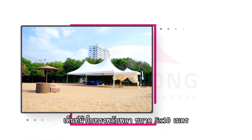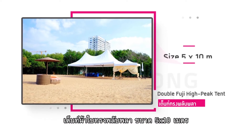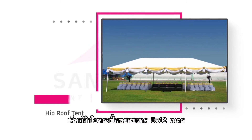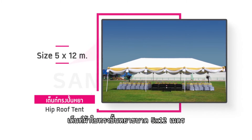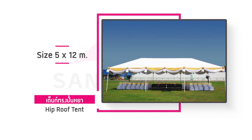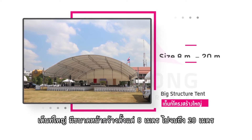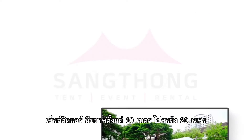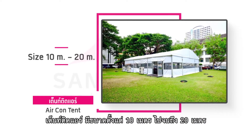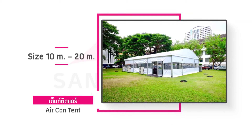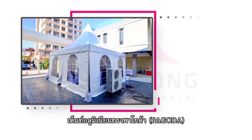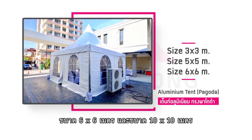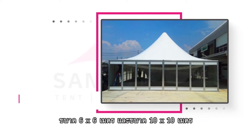The pyramid tent comes in sizes of 5x10 m and 5x12 m, with 24 siding units. The space is 10m into 20m. Available sizes include 3x3, 5x5, 6x6, and 10x10 m.